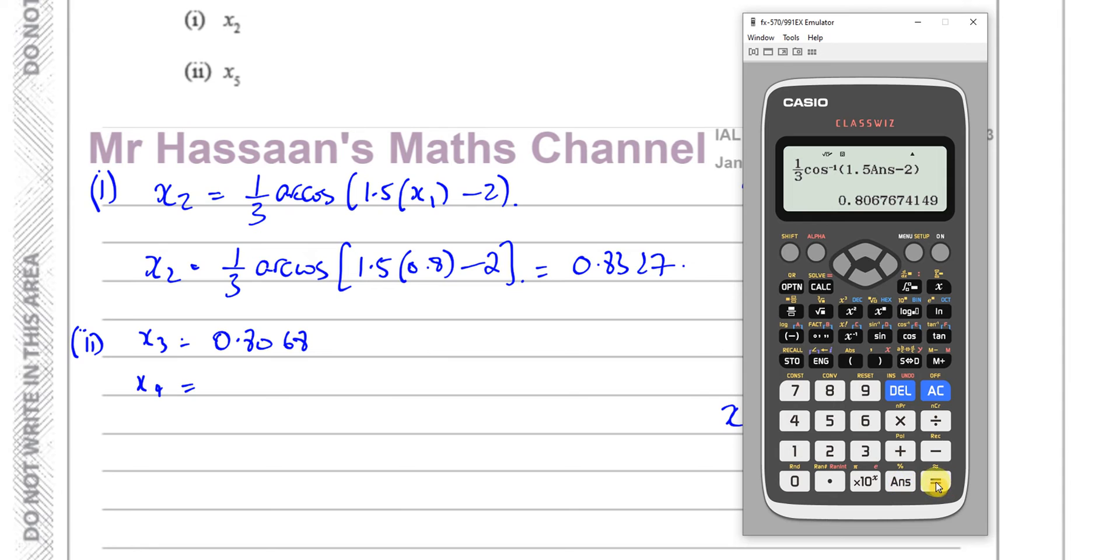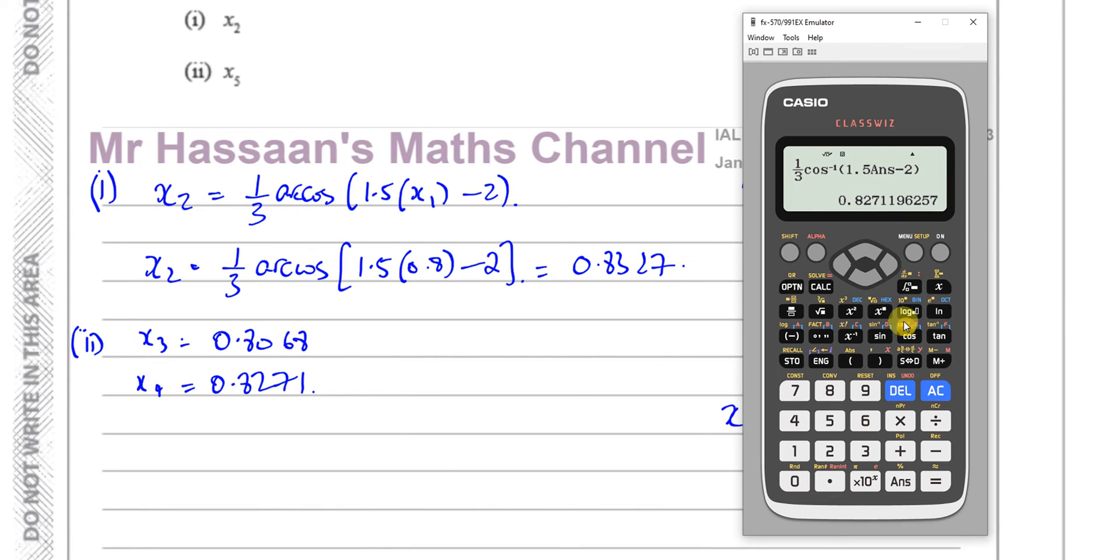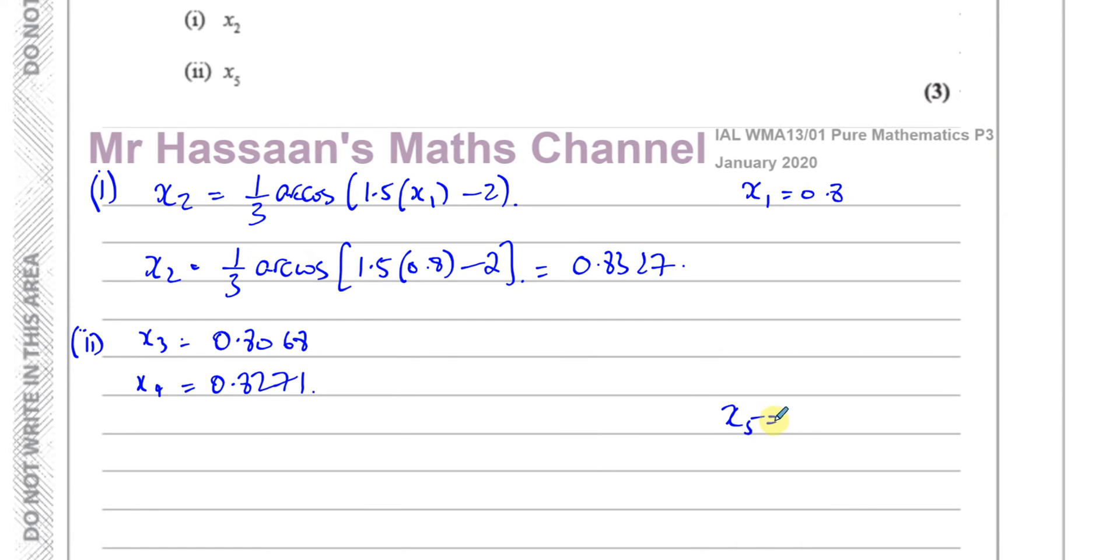I press equals again, it's going to give me x4. It's going to put x3 into here, and that will come out with x4. So that's 0.8271. 0.8271. But they want us to find x5. Okay, the final answer. So I have to press it one more time. That's now x5. 0.8110. 0.8110.